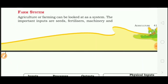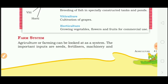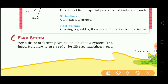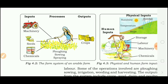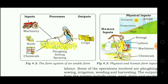Let's talk about the farm system. Like any other system, the farm system also has input, processing and output. Machinery, seeds and chemicals are the inputs of the farm system. Plowing, sowing and spraying are the processes, and crops are the output of the farm system.